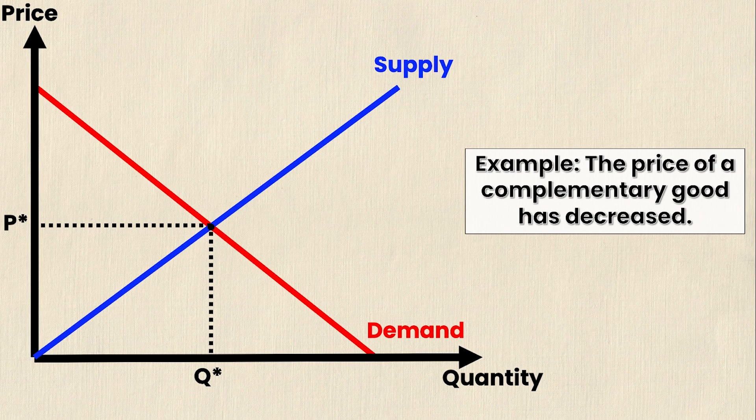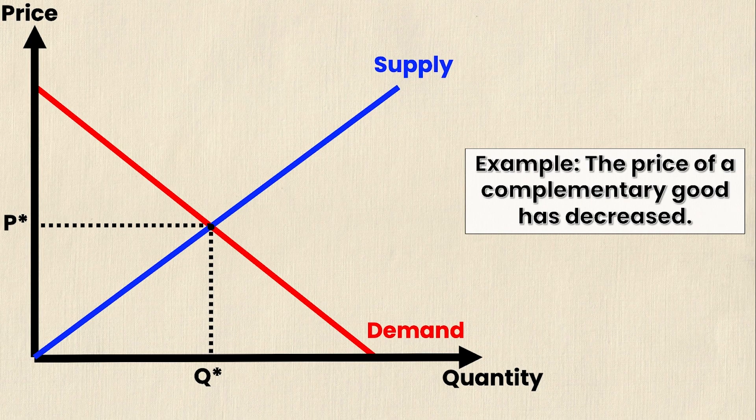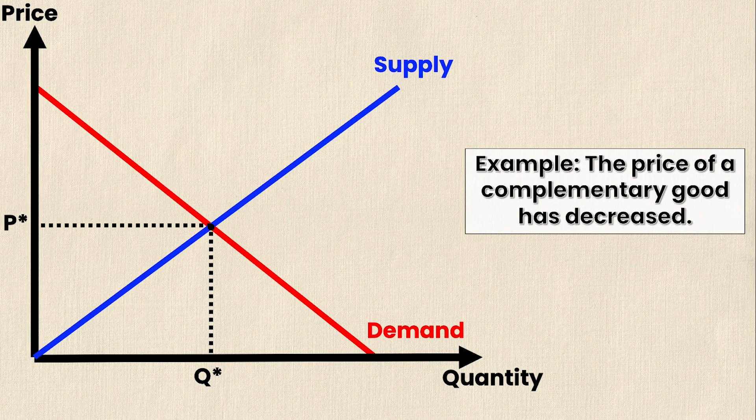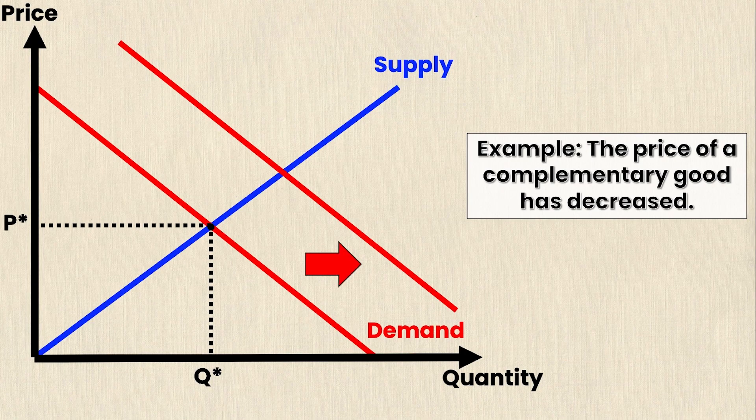If you need an example, think about peanut butter and jelly. Imagine you consume these together all of the time. Well if the price of peanut butter goes down then you will demand more jelly. So this will shift the demand curve to the right as you can see here.